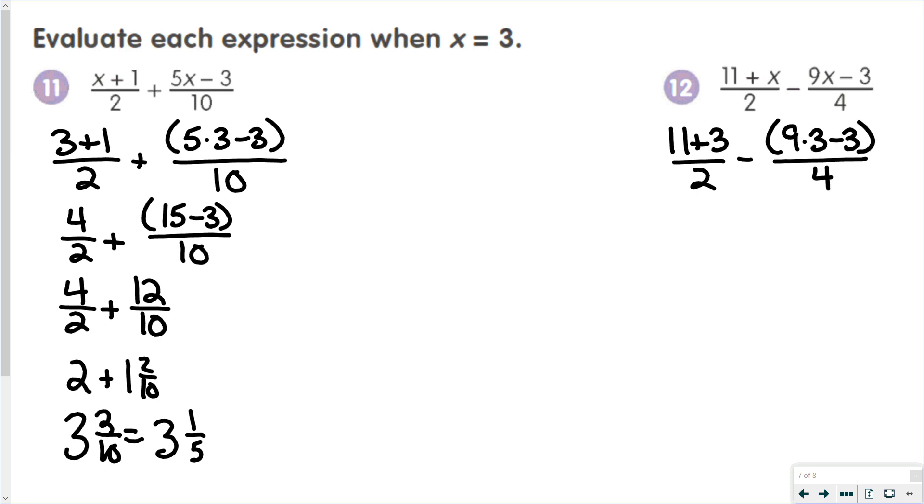11 plus 3 is 14. 9 times 3 is 27. 27 minus 3 is 24. 14 over 2 is 7. 24 over 4 is 6. 7 minus 6 is 1.